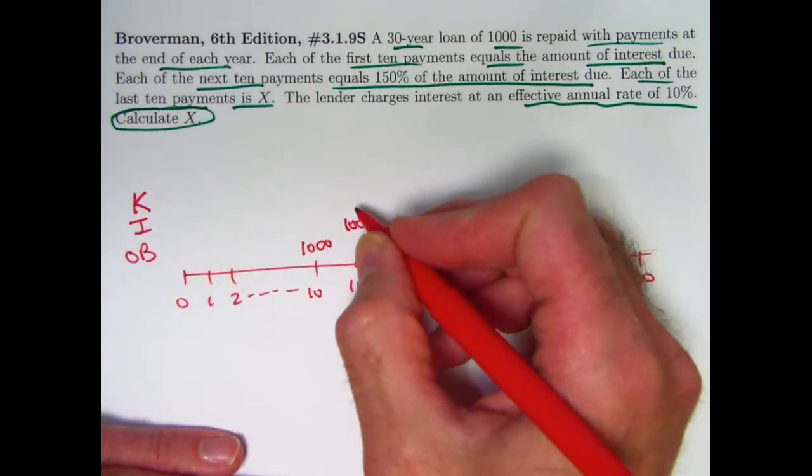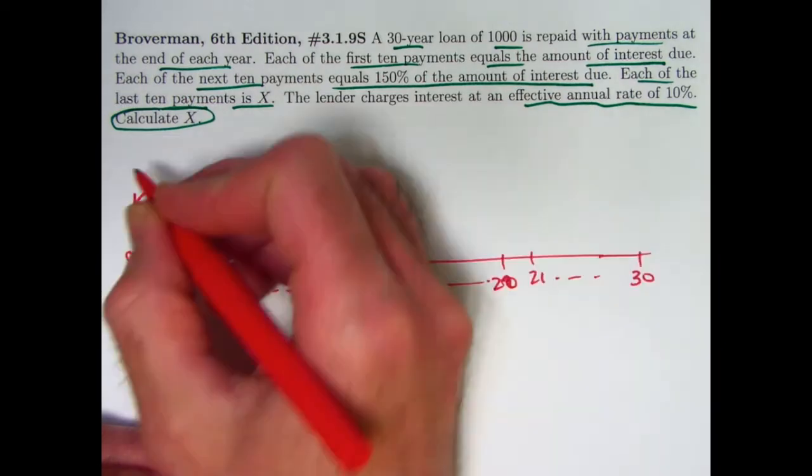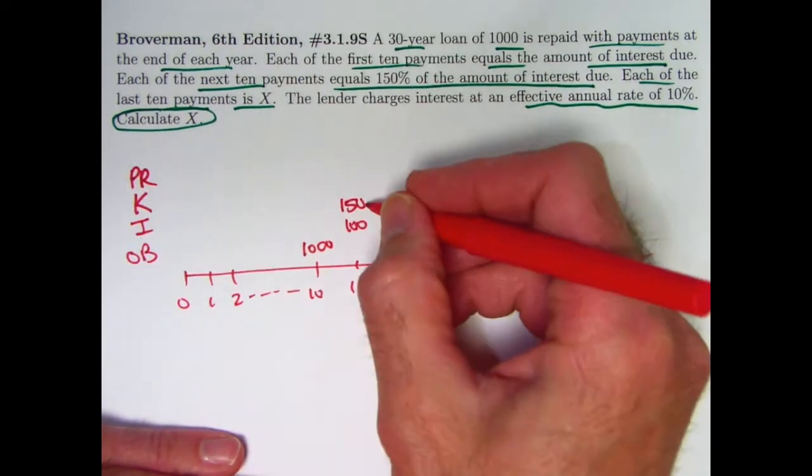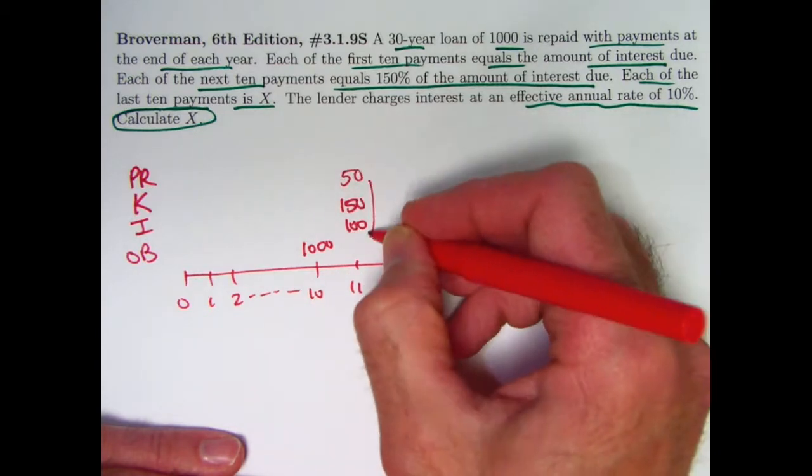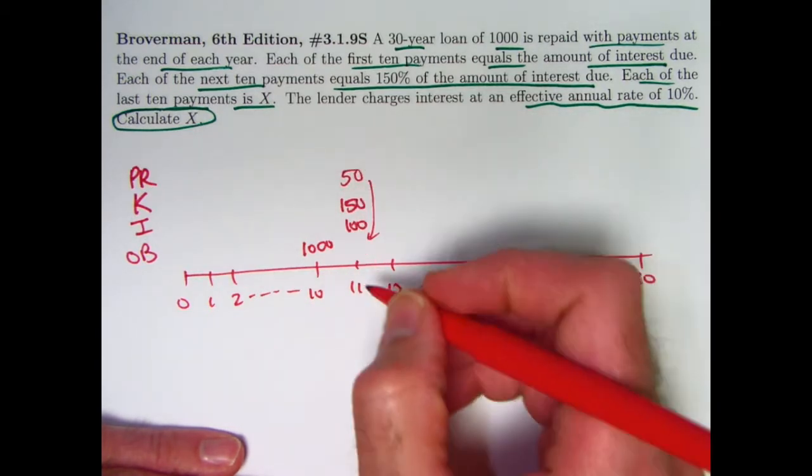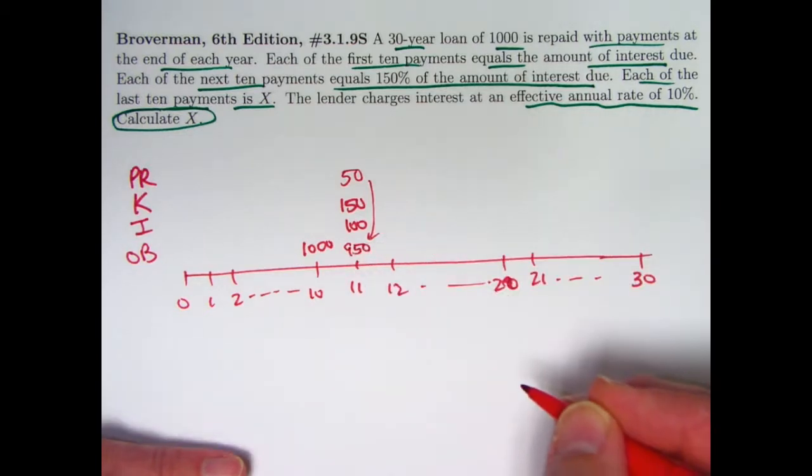K itself, it's going to be 150% of that. It's going to be 150. And that means the principal reduction is going to be 150 minus 100 is 50, and therefore now the outstanding balance at time 11 immediately after that payment will be 950, 1,000 minus 50.